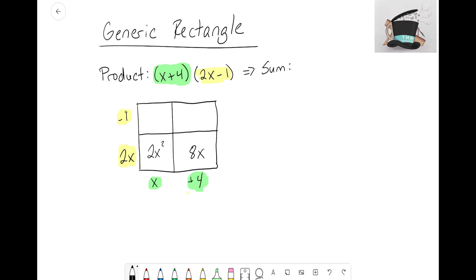Let's do the top left: I have my negative 1 unit tile, and on the bottom I have the x tile. Well, x times negative 1 gives you negative x. Finally, in the top right corner of my generic rectangle, I have negative 1 times 4, which gives me negative 4.